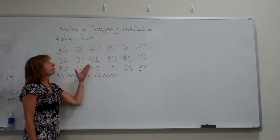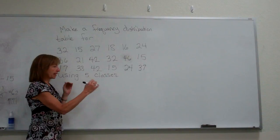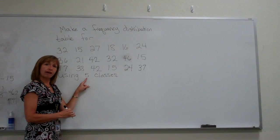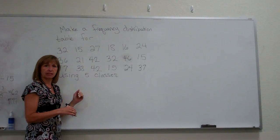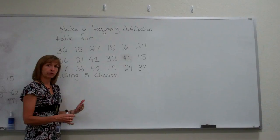For doing frequency distribution tables, what we want to do is set up spans of numbers for our data values so that we would get five spans of values and then find out where each of these numbers fit. Then take a tally of that, which will later change to a numerical value.